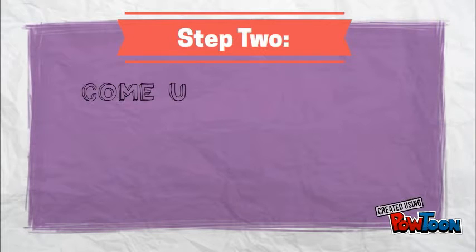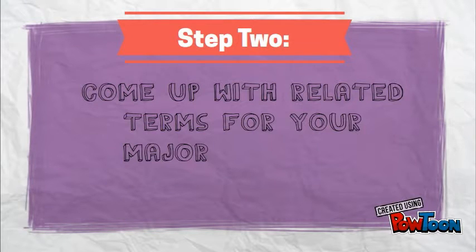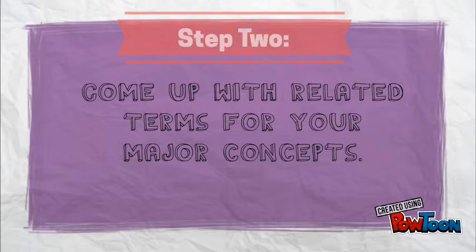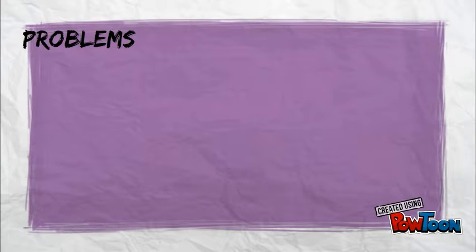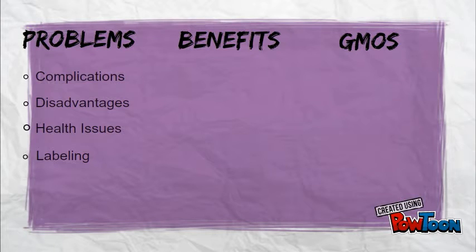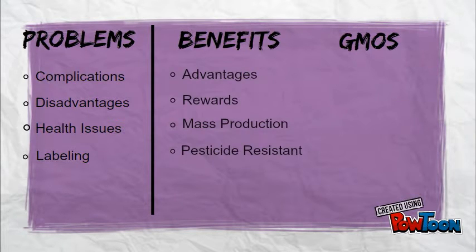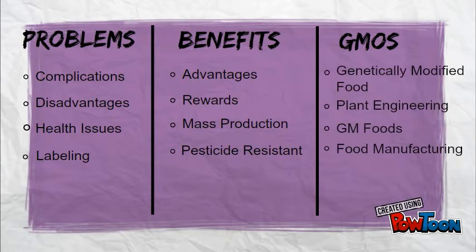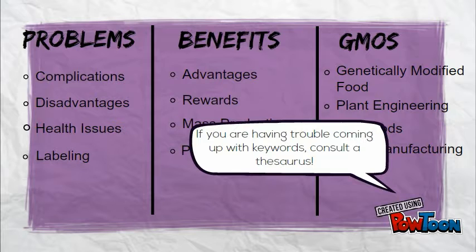My next step is to come up with related terms so I get variety in my search results. The easiest way to come up with related terms is to brainstorm a list. I can write down synonyms for my major concepts or specific issues on GMOs I know I want to research further. These will be my keywords.